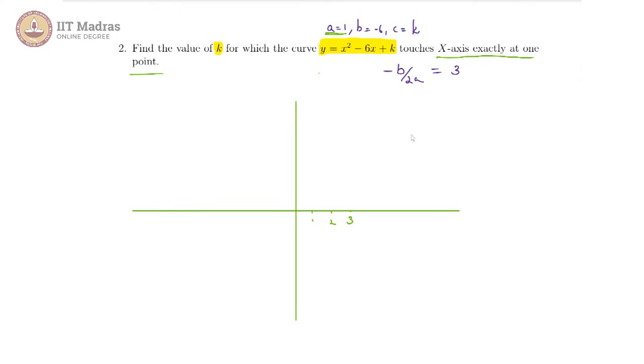If it touches the x-axis at exactly one point, that is only possible when the vertex is right here on the x-axis itself, and from here our parabola looks something like this.